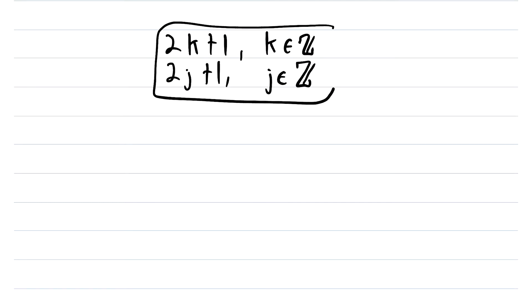Using what we've started with here, two arbitrary odd numbers, show that when you multiply them, you get another odd number. So hopefully you've given it a shot, let's walk through an outline of the proof.